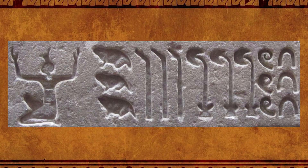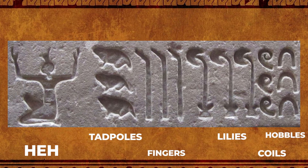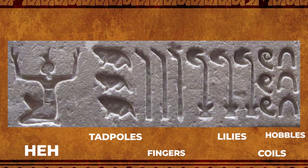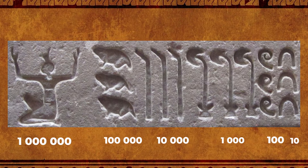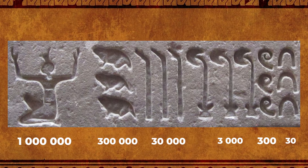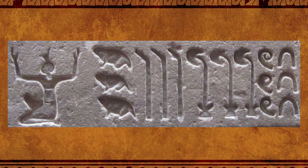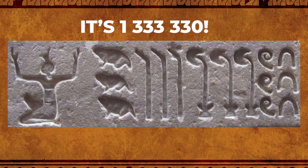From what we know, what would this number be? Starting from the left, we find the god He, three tadpoles, three bent fingers, three water lilies, three rope coils, and three hobbles. First, translate the symbols into their numerical values, then count how many of those symbols there are. In this case, apart from He, there are three of each. This gives us a value of one million for the god, three hundred thousand for the tadpoles, thirty thousand for the fingers, three thousand for the lilies, three hundred for the rope coils, and thirty for the hobbles. This system is additive, so the symbols can appear in any order.